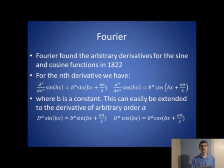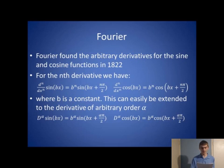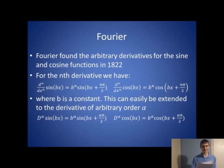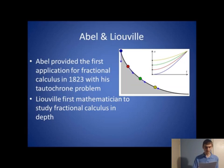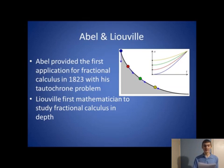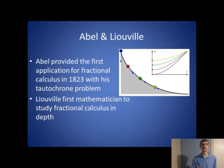In 1822, Fourier found the formulas for the arbitrary derivative of the sine and cosine functions by extending the nth order derivative formulas to arbitrary order alpha. Abel provided the first application for fractional calculus with his tautochrone problem in 1823. The tautochrone problem involves finding a curve in which the time taken to reach the bottom is independent of the starting position, assuming no friction and constant gravity — meaning two point masses starting at different heights reach the bottom simultaneously.